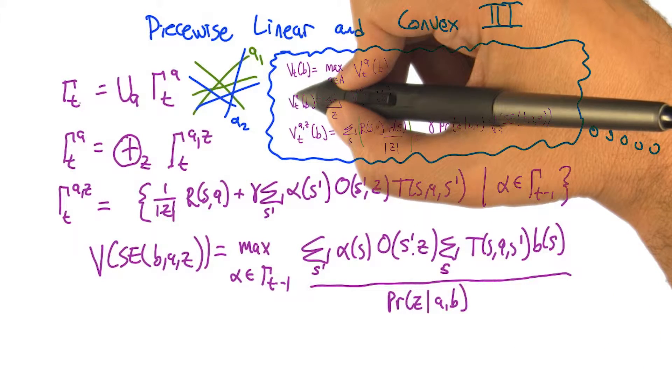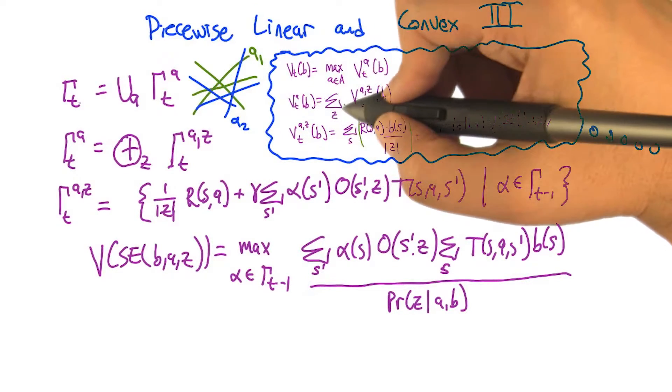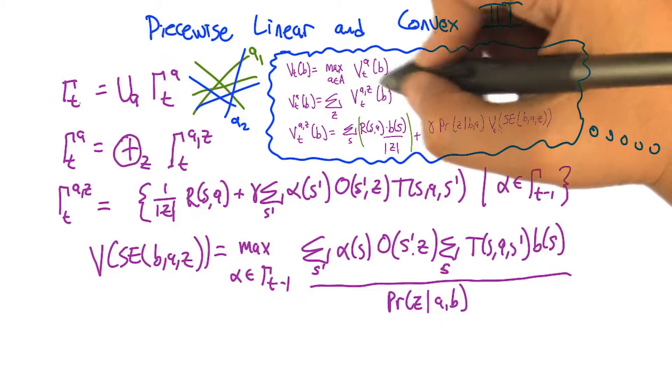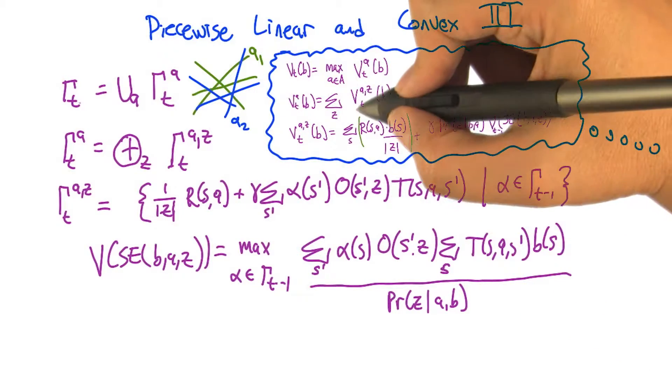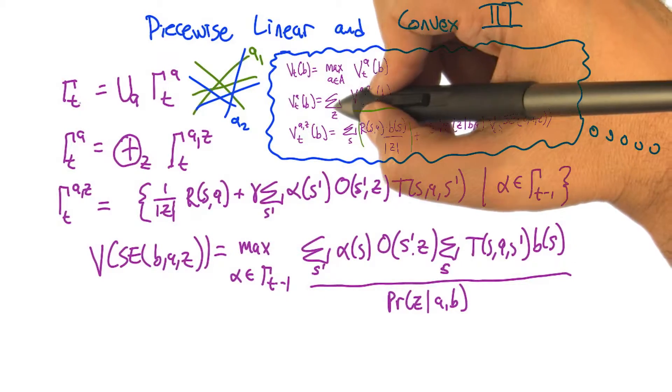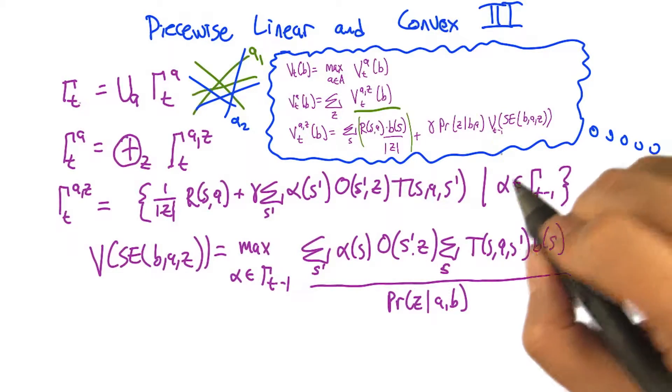The next piece is that the value function for an action A at time step T for belief state B. We said that it was the sum over observations of some particular vector that we get for that observation. If these can be represented using bags of vectors,